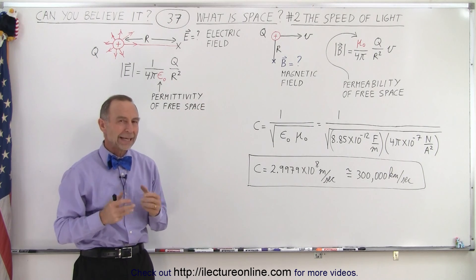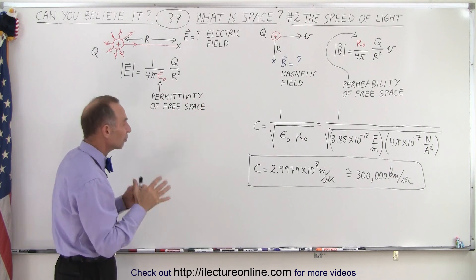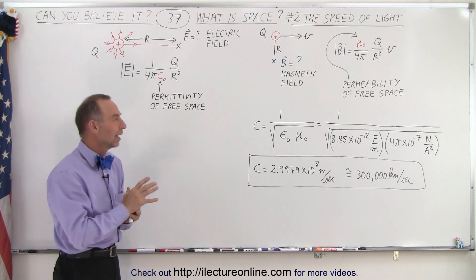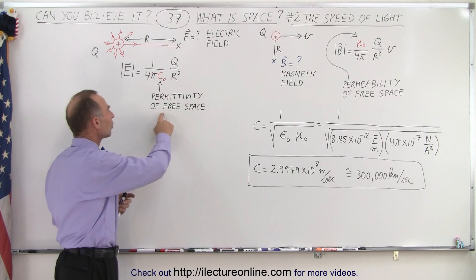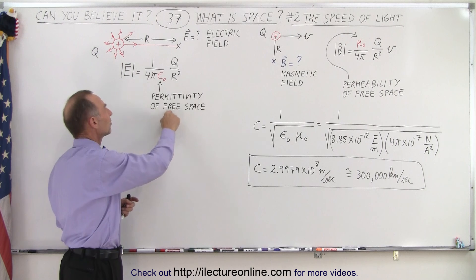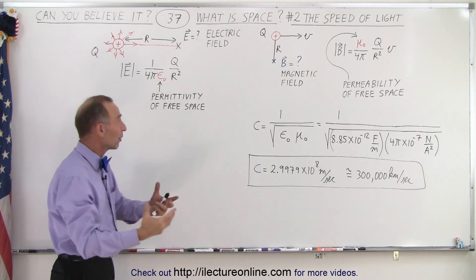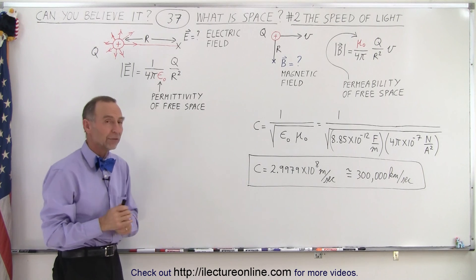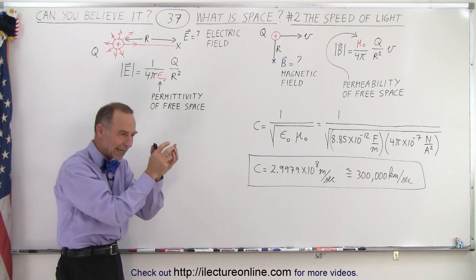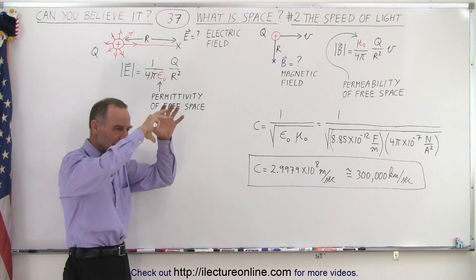That electric field strength is controlled by space, and it controls it by something we call the permittivity of free space. It's a constant that we discovered and it's used in any one of our equations where we calculate the strength of the electric field. So when we have a charge in space, there's an electric field around it and the strength of that field is controlled by the property of space.